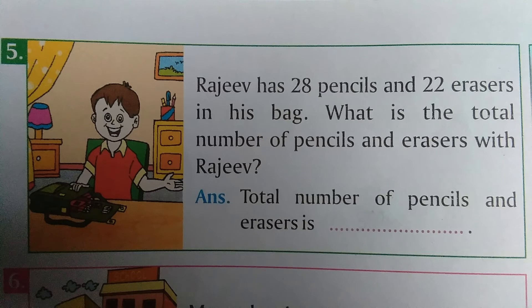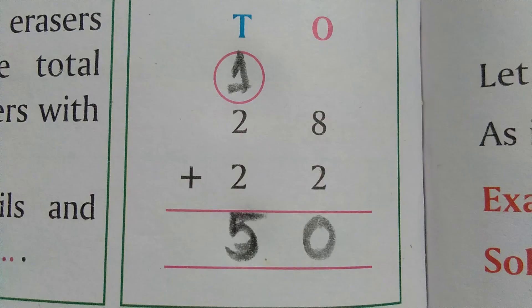Question number five: Rajiv has 28 pencils and 22 erasers in his bag. What is the total number of pencils and erasers with Rajiv? From that question we understand there are two things: pencils and erasers. To find the total, we need to add them. Remember the hint, students — if the word 'total' is given in the question, we know we need to add them.